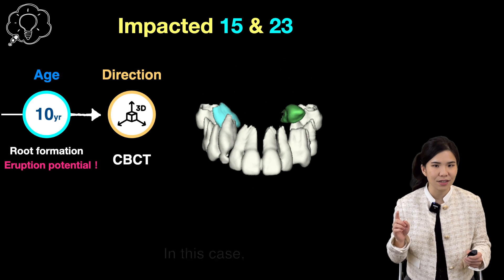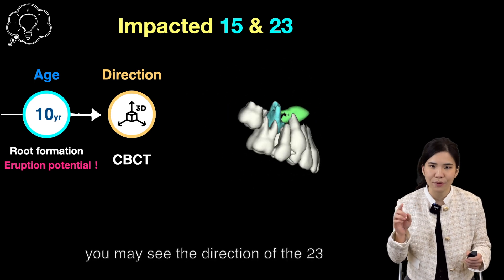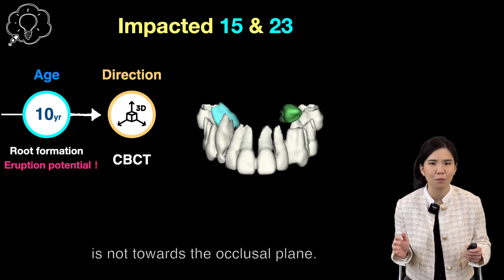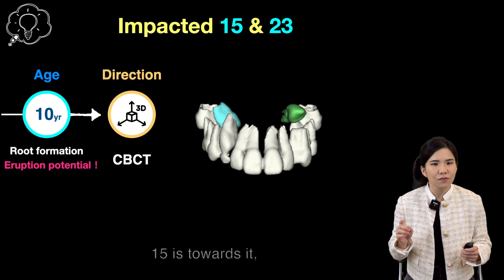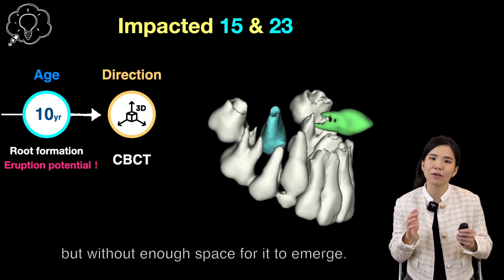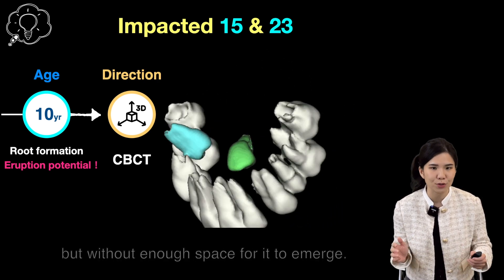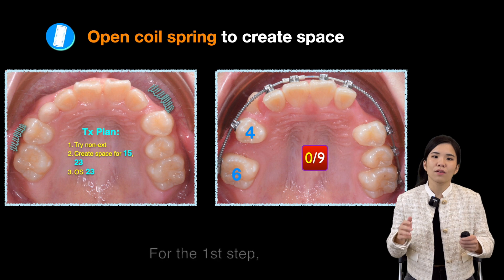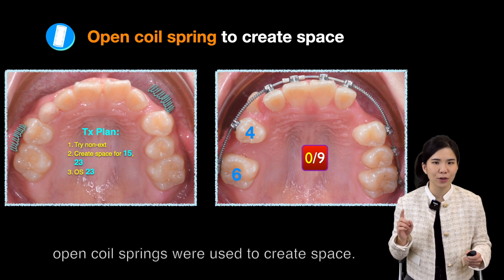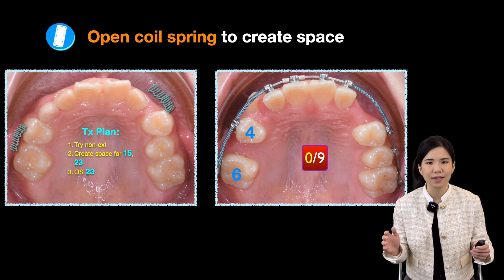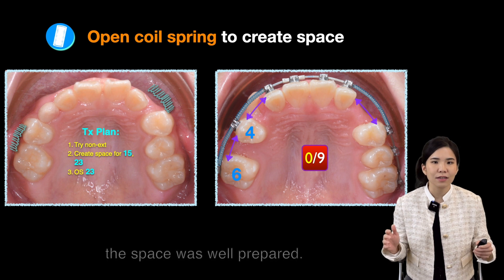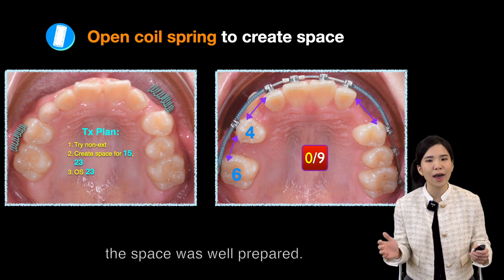In this case, you may see that the direction of tooth 23 is not towards the occlusal plane, while tooth 15 is directed towards it but without enough space to emerge. For the first step, open coil springs were used to create space, and after 9 months, the space was well prepared.